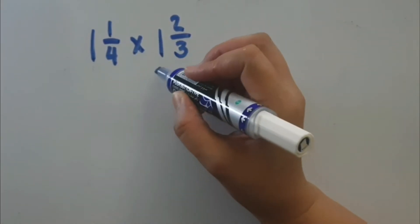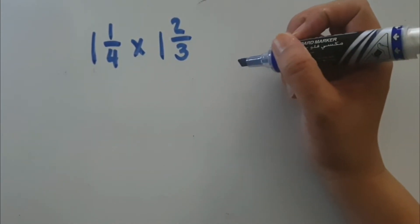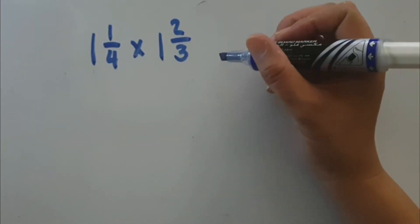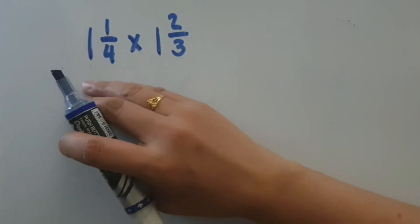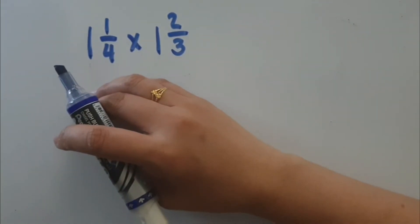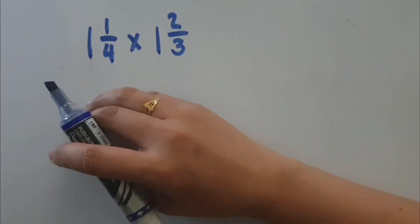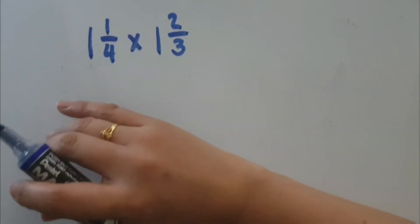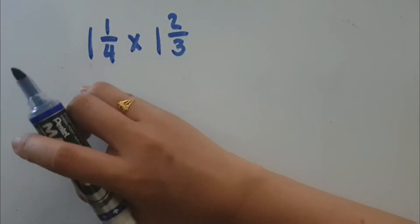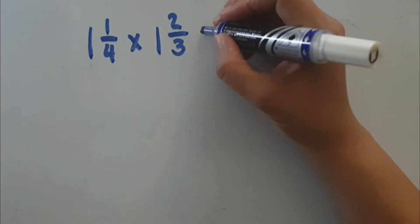Now, what if we have mixed numbers like 1 and one-fourth times 1 and two-thirds? What do you think should we do first? If you have mixed numbers and you will multiply them, then you have to change them first to fractions, or what we call improper fractions. To do that, we have to multiply the denominator by the whole number and then add the numerator. That will be the new numerator, and then copy the same denominator.